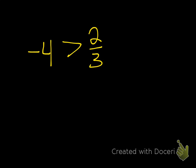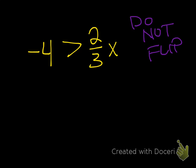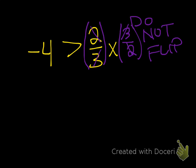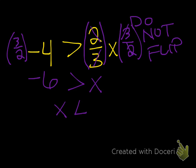Number 5: negative 4 is greater than two-thirds x. Do we have a negative coefficient next to the x? Nope, it is not negative, so we are not going to flip it. If you're getting rid of a fraction — I've got 2/3 here — multiply by 3 over 2, the 2's cancel and the 3's cancel, and I'm left with x. Do the same thing on the other side: 3 over 2 multiplied by negative 4 is negative 6. So I have negative 6 is greater than x, which changes to x is less than negative 6.